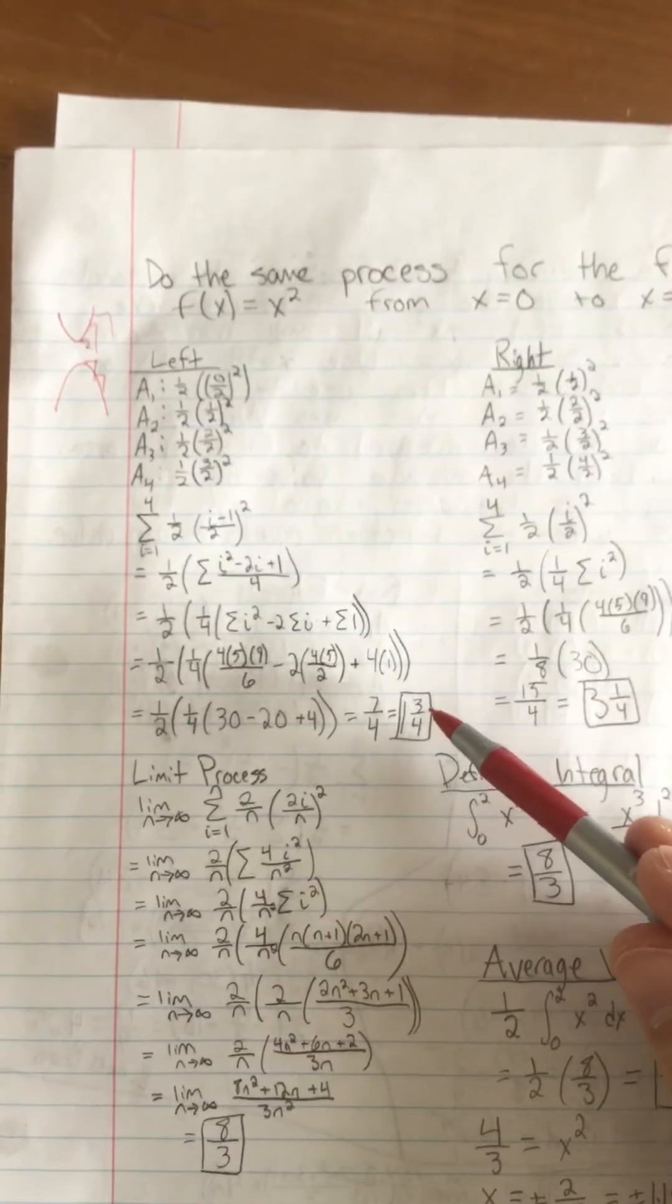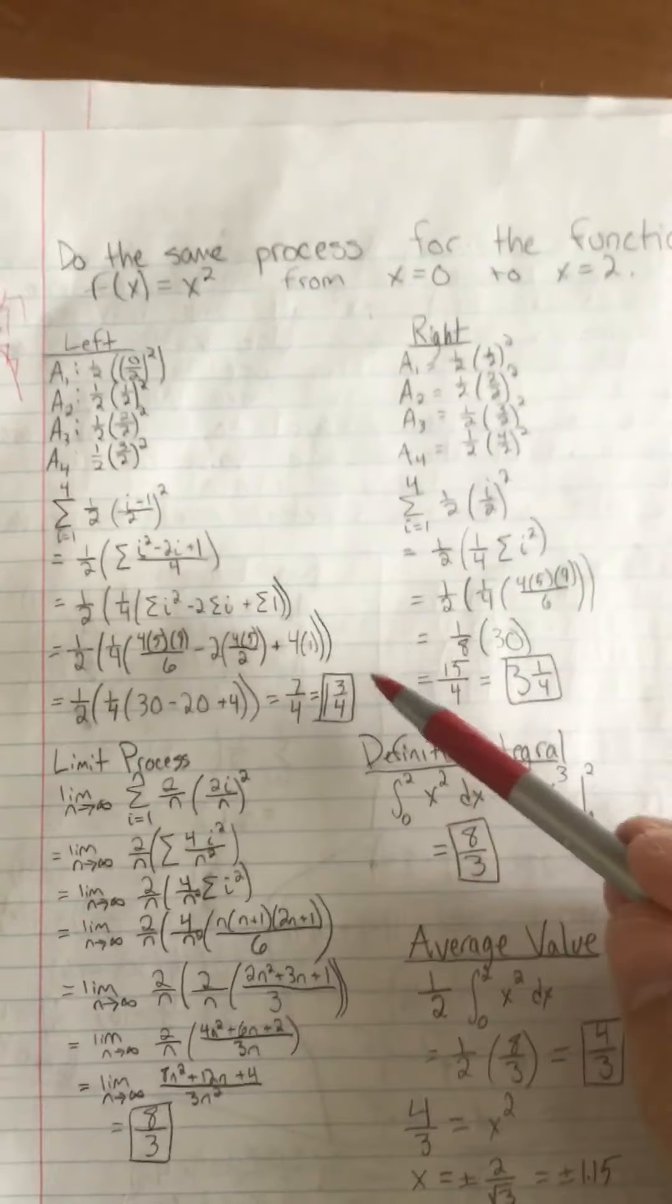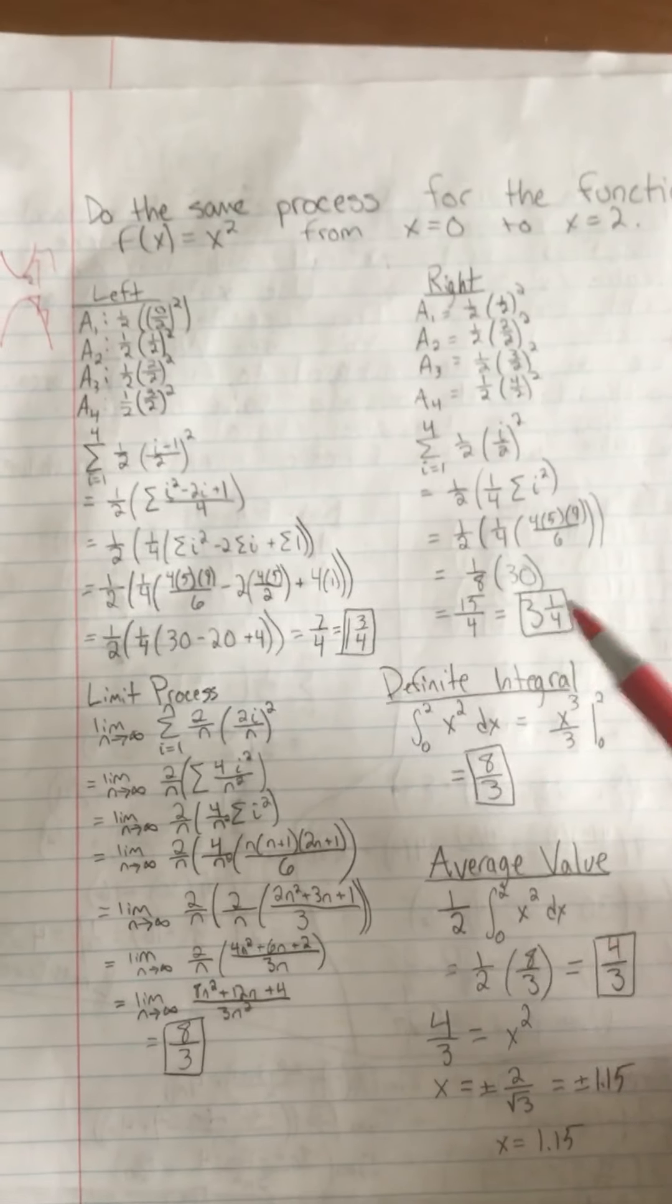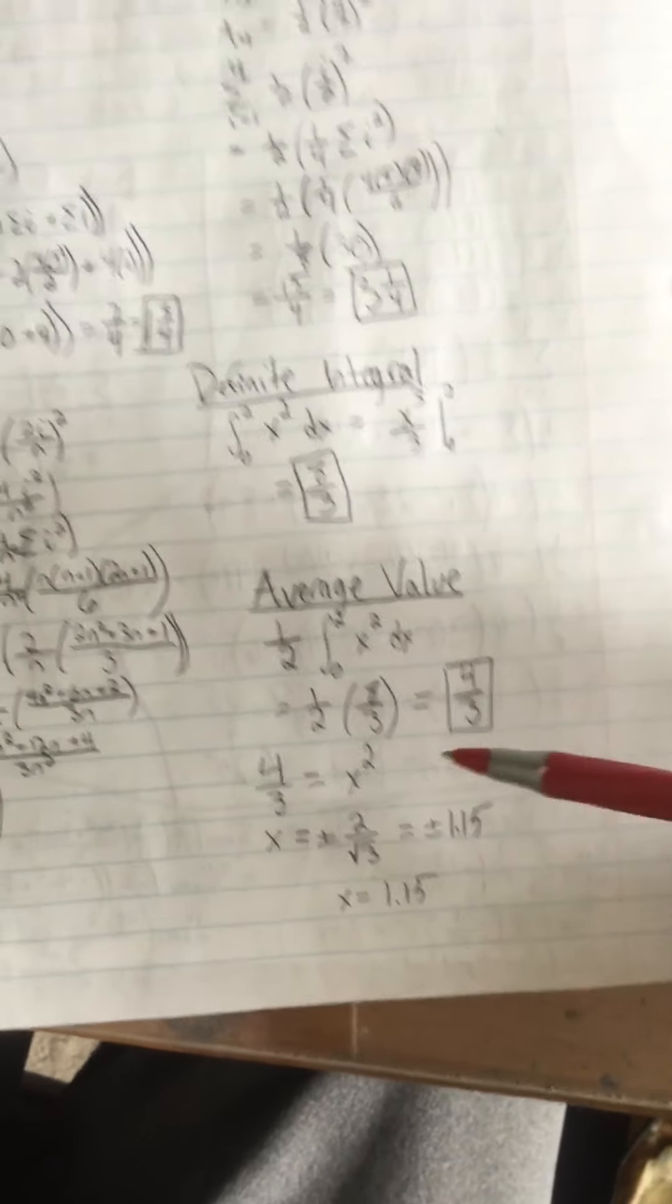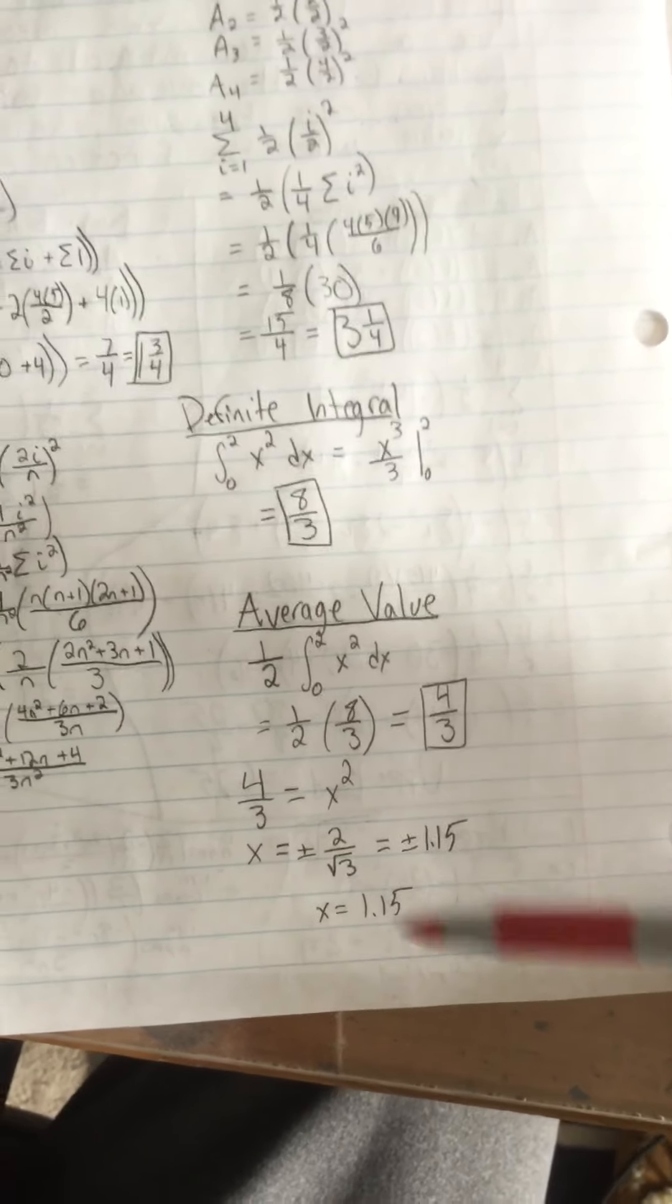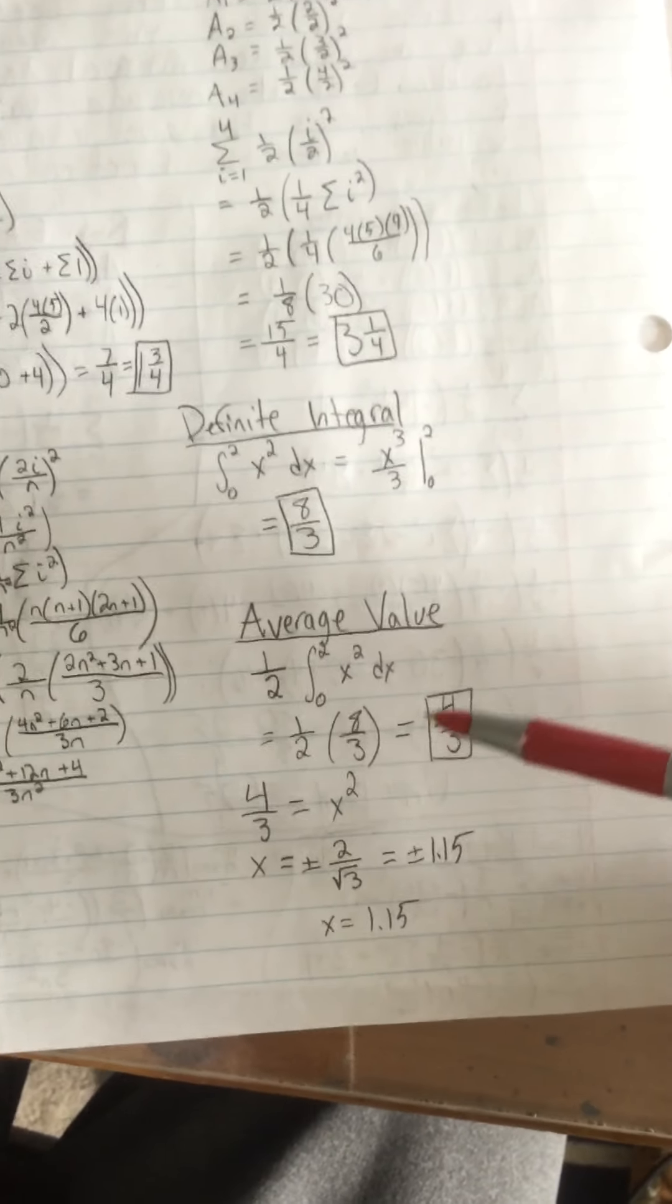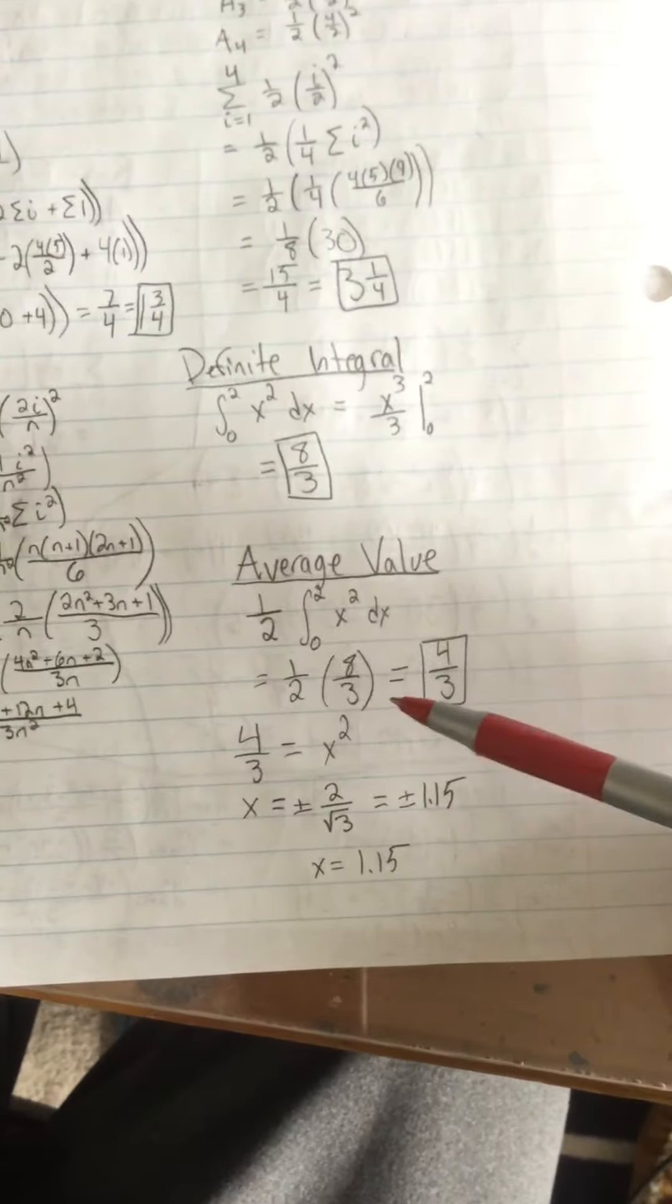So that's why here the left endpoint is actually less than the right endpoints, but we still know that the area is going to be in between these two. Eight-thirds that I got both with the limit process and the definite integral is in between one and three-fourths and three and one-fourth. And then it's actually funny that we get the same average value, or we didn't get the same average value, we got a different average value, we actually got the same x value here. Basically that's just by coincidence here. When we took the square root, it happened to be the same number here. It's not always going to be this 1.15, it just happened to be for that one.